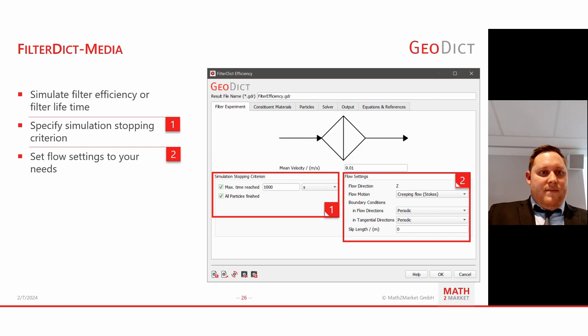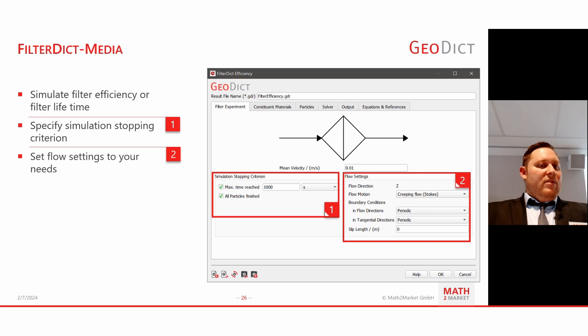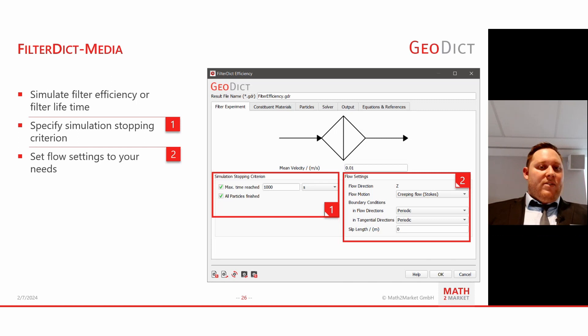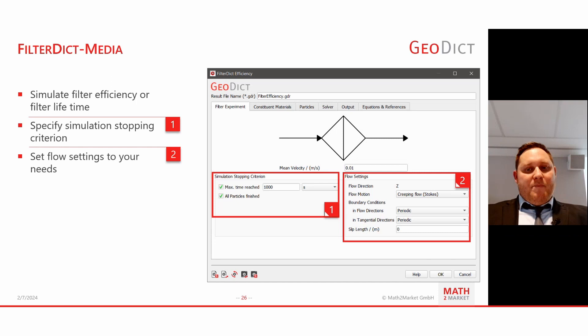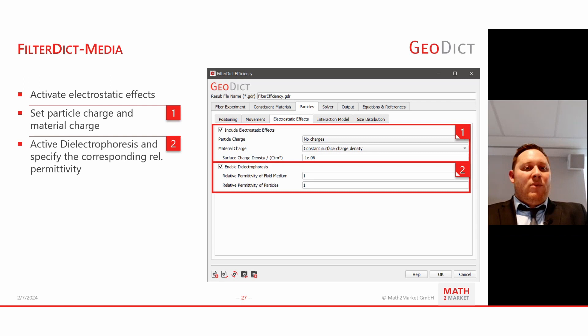When we then move to FilterDict Media to simulate efficiency or filter lifetime, we first specify the simulation criterion — which can also match the stopping criterion from your experiment. We set the flow settings to our needs and keep the GeoDict defaults, which are mostly suitable for filter media applications. We specify the mean flow rate as the main parameter. In the live demonstration we'll go over some subtabs, but the focus is on the electrostatics.